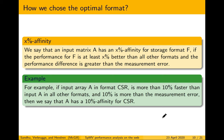When we run a matrix for SpMV, we look at the performance for all four formats and choose the optimal format using 'X percent affinity.' A matrix A has X percent affinity for storage format F if the performance for F is at least X percent better than other formats and the performance difference exceeds the measurement noise. If a matrix has X percent affinity for more than one format, we call it a combination format. In this paper we use 10 percent affinity as our criterion.